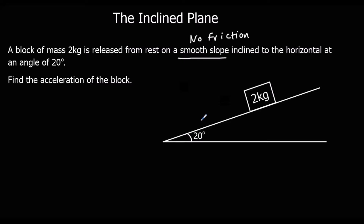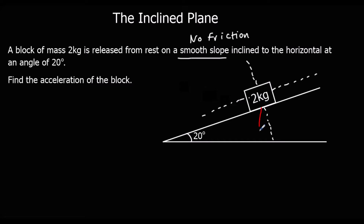We need to draw the forces onto our diagram. I'm going to draw a tilted set of axes in line with the plane, tilted by 20 degrees. Acting vertically down towards the centre of the Earth we have the weight of the block. Its mass is 2kg and its weight is mass times gravity, so that will be 2g.